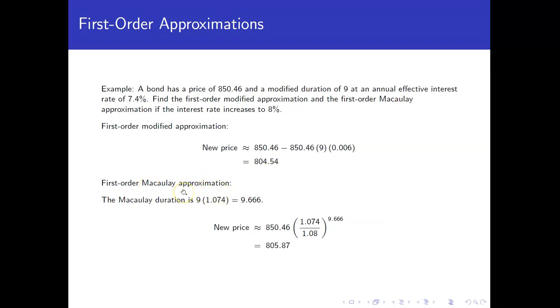Using our first order Macaulay approximation, the first thing we have to figure out is what the Macaulay duration is because we were given the modified duration. At the interest rate that we were given, the starting interest rate, the Macaulay duration will be 9 times 1 plus i, so 9 times 1.074, which is 9.666. Using that first order Macaulay approximation formula, it's price at the original interest rate times the quotient of 1 plus the original over 1 plus the new, and then raised up to the Macaulay duration. If we do that one, we get $805.87.